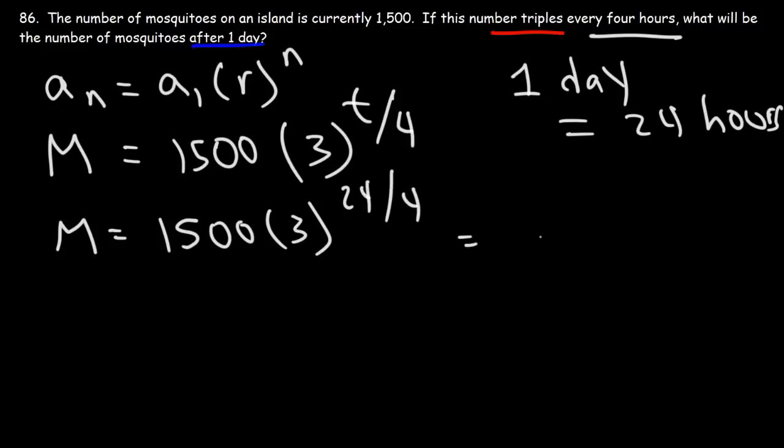So it's going to be 24 divided by 4. And this makes sense because if the number of mosquitoes triples every four hours, it's going to triple six times in the 24-hour period. 24 divided by 4 is 6.